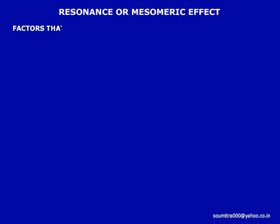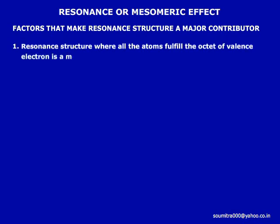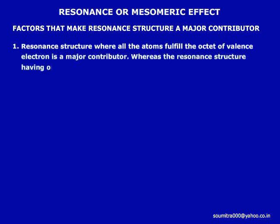Let us discuss some of the points that make a resonance structure the major contributor. The first point is: a resonance structure where all the atoms fulfill the octet of valence electrons is a major contributor, whereas a resonance structure having one atom not fulfilling the octet of valence electrons is a minor contributor.